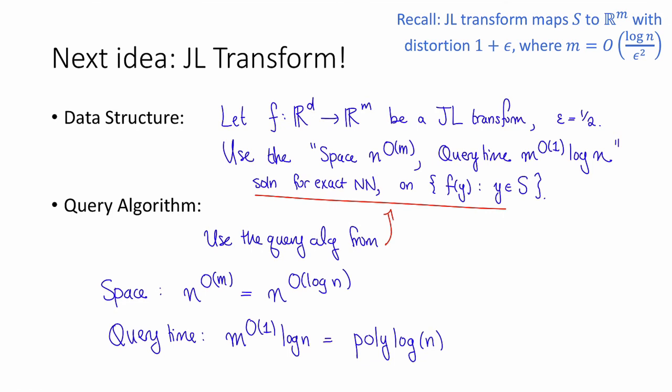Okay, so at least the query time is sublinear, that's great. The amount of space used, well, this is better than n to the big O of d if d is really big, but it's still not great. Ideally, we'd want something linear in n, not quasi-polynomial in n. So let's put kind of a mediocre, not quite happy face there.